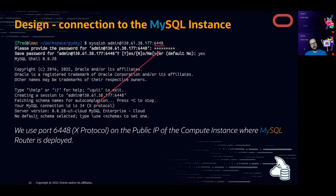Port 6448 forwards to the X Protocol on the MDS instance. Port 6446 would use the classic protocol, but here I want to use the MySQL Document Store so I connect on the X Protocol. As you can see, it confirms I'm connected on the X Protocol.